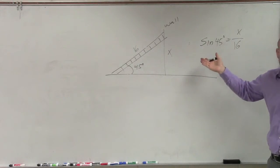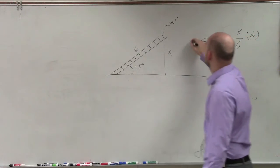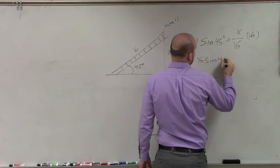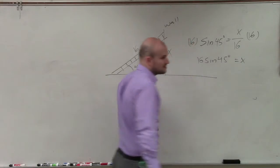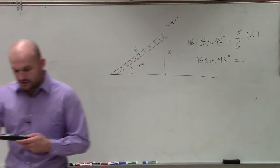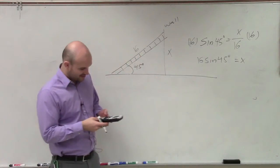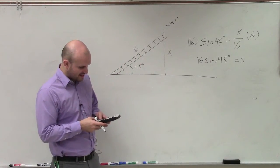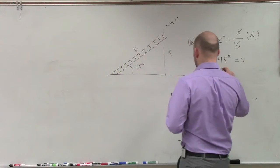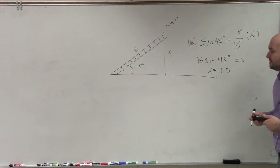We already know the angle, so we can just multiply both sides by 16. That gives us 16 times sine of 45 degrees equals x. Make sure your calculator is in degree format since the angle is in degrees. Type in 16 times sine of 45, and therefore x equals 11.31.